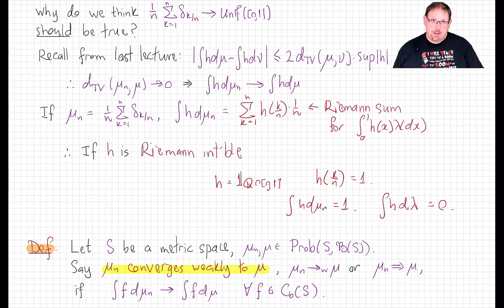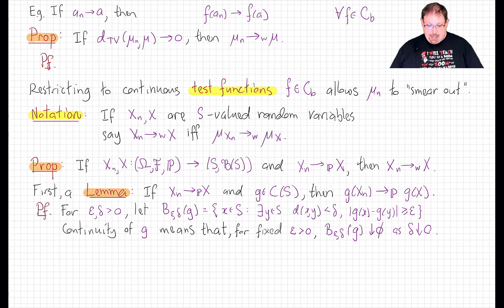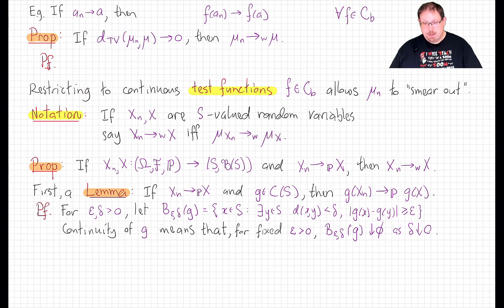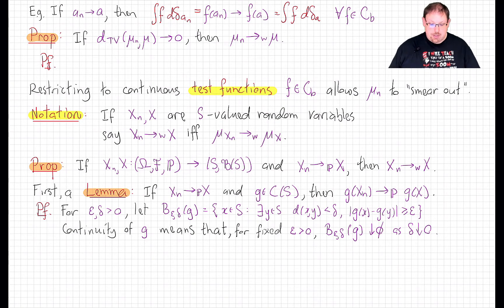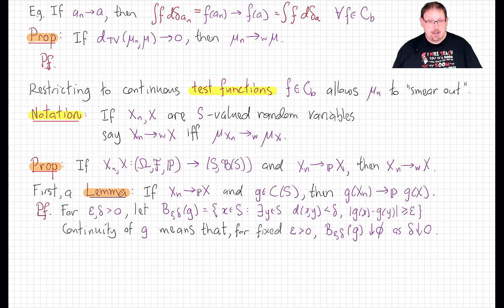What about our other counterintuitive example? Take any sequence of real numbers converging to a real number a. By the definition of continuity, if f is any continuous function, f(a_n) converges to f(a). But f(a_n) is the integral of f against the point mass delta_{a_n}, and f(a) is the integral of f against delta_a. So we do see that delta_{a_n} converges weakly to delta_a — we can have weak convergence even when we don't have total variation convergence.